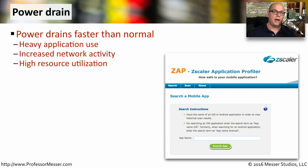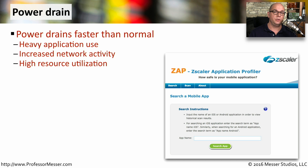If you find the power on your mobile device is draining faster than normal, you might want to check to see what applications might be in use. You might be using the network more than you might expect, and there might be high resource utilization. This may be due to normal application usage, but you might be concerned that there are other malicious software on the device being used as well.